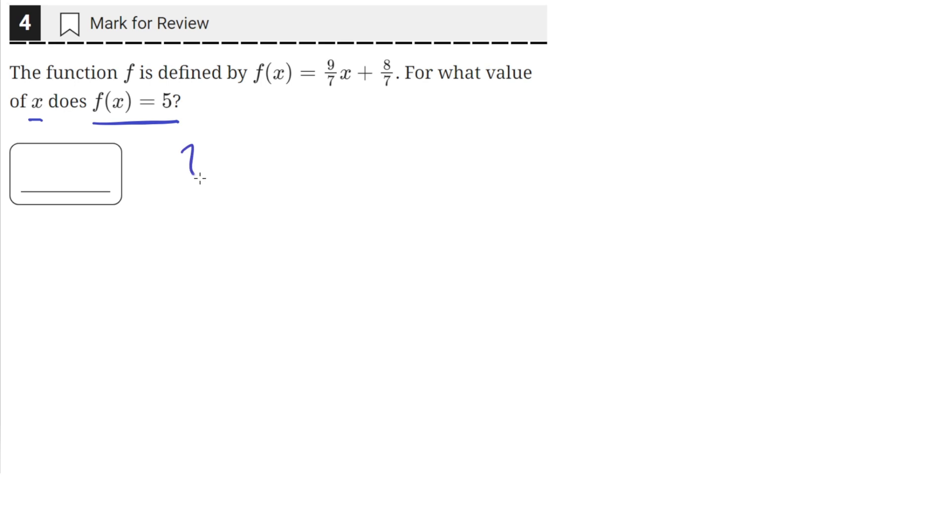We need to find a value of x where f(x) equals 5. We can do that by setting f(x) equal to 5 in this equation and solving for the value of x. So we'll set f(x) equal to 5: 5 equals 9 over 7x plus 8 over 7. Then we'll just solve for the value of x.